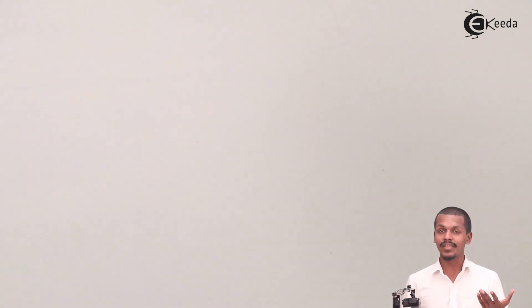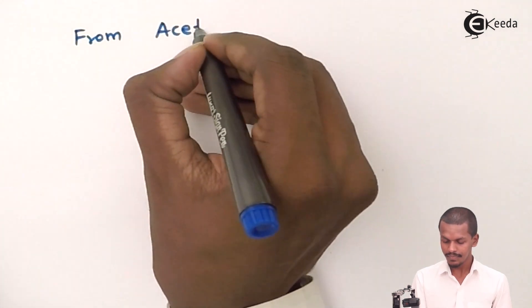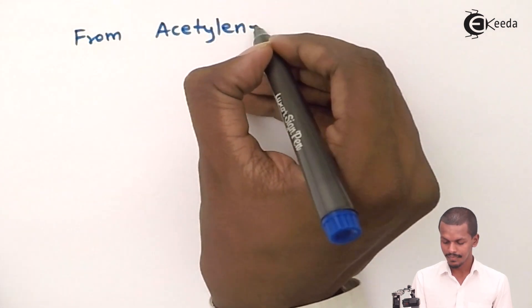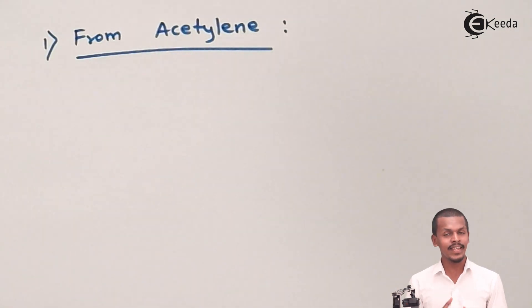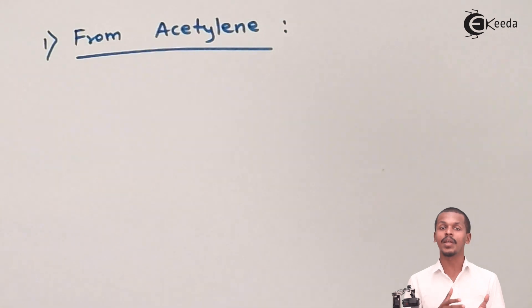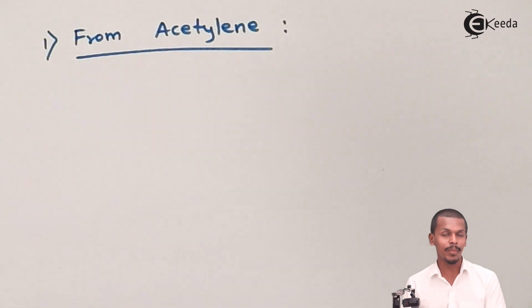Now we are going to talk about how we can prepare benzene from acetylene. Acetylene is nothing but ethyne, which consists of a carbon-carbon triple bond, and we have to convert it into benzene.